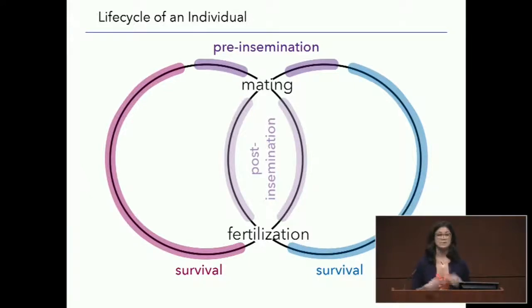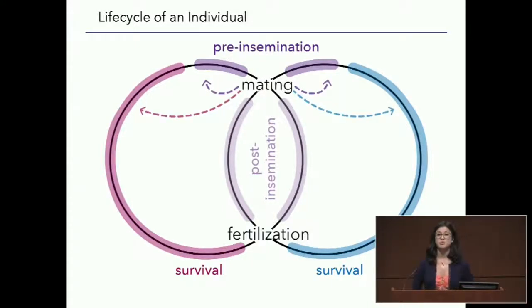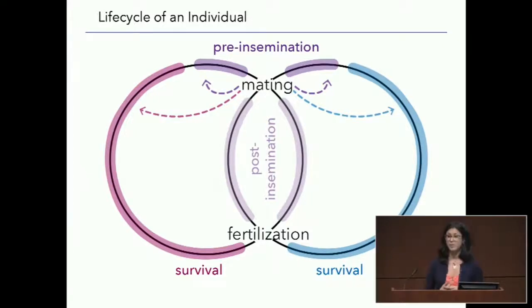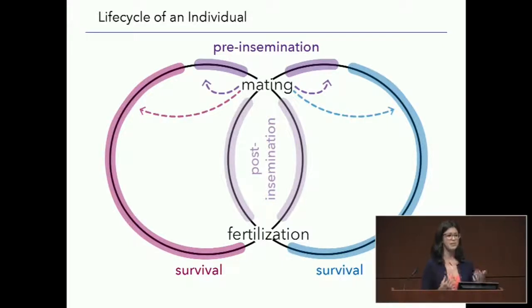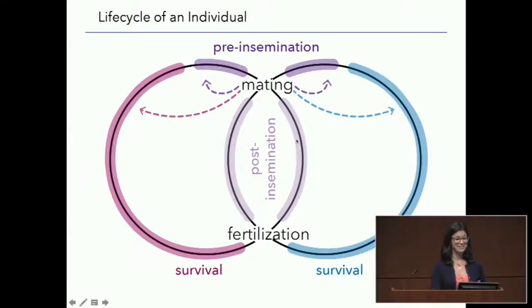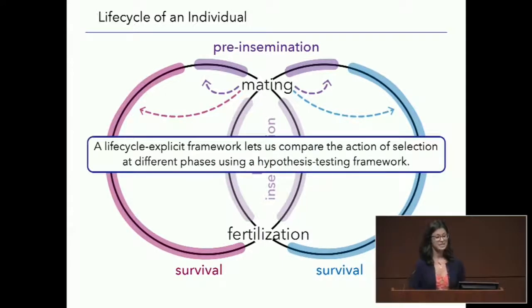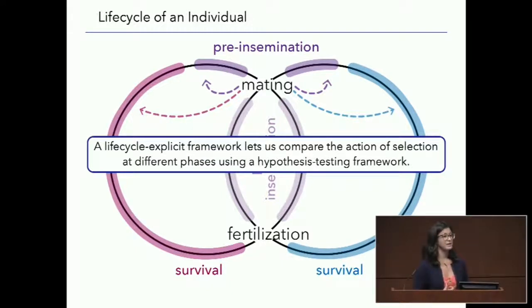This represents a single generation, a discrete life cycle. But we can add some connectivity — in particular by relating mating back either into the survival phase, or individuals can go directly back into mating again. I like using this type of framework because now we can start to think about making comparisons and hypothesis testing between the sexes at different phases, or looking at the sexes between pre-insemination and post-insemination phases.